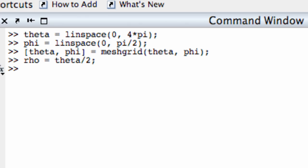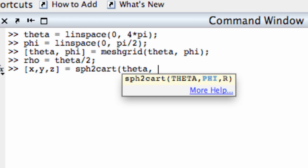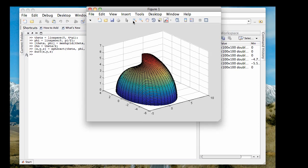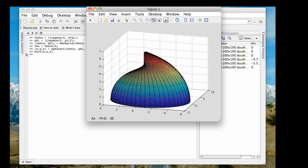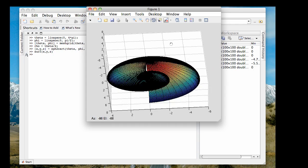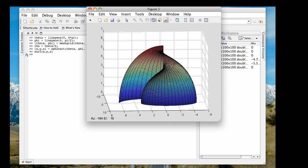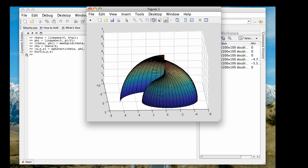And now, again, I've defined theta, phi, and rho. I need to convert all those to Cartesian coordinates if I want to plot my surface. So x, y, z equals sphere 2 Cartesian of theta, phi, rho. And now let's see what kind of surface I've got. If I plot surf x, y, z, you get a kind of an interesting looking little shell-shaped region. And you can get up underneath it and see the spiraling effect that you have there by letting rho equal some fraction of theta. So that's kind of cool.